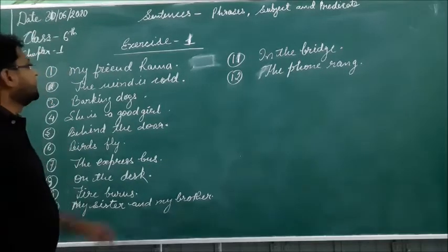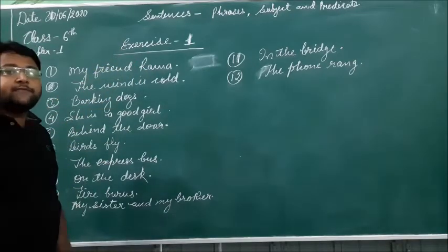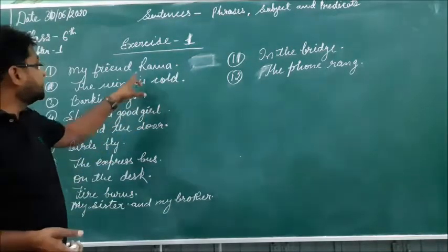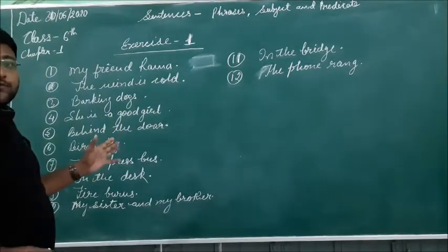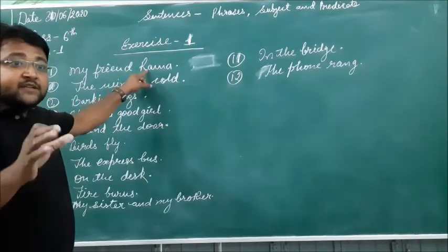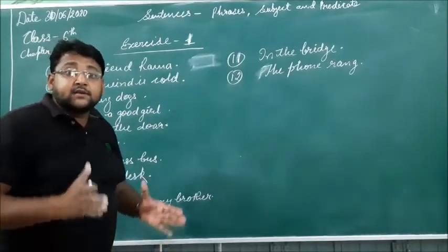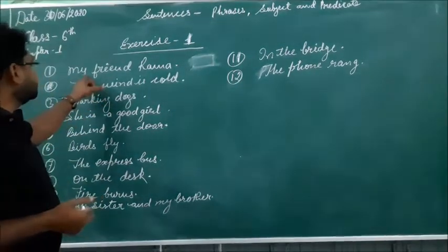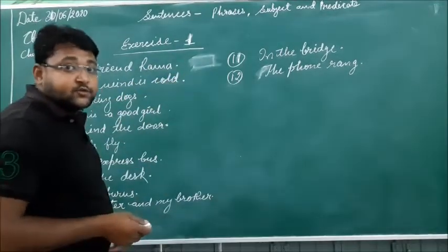Dear students, as you can see here, Exercise 1 of Chapter 1. In these sentences you have to find out which is a sentence and which is a phrase. In front of a sentence write 'S' and in front of a phrase write 'F.' So 'My friend Rama' — a phrase is that which has no subject and predicate of its own, so that is a phrase.